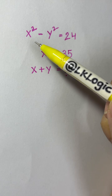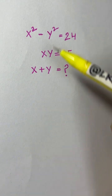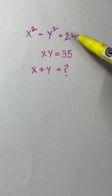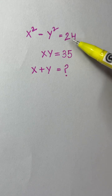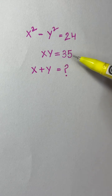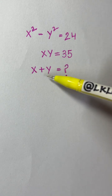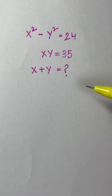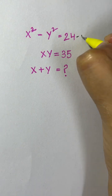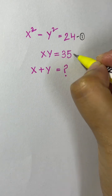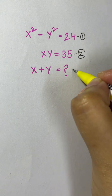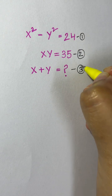Hi everyone. In this video we are going to solve this equation: x squared minus y squared equals 24, and xy equals 35. So what is x plus y equal to? Let us say that this is equation 1, this is equation 2, and this is equation 3.